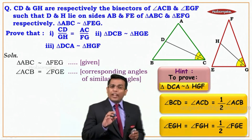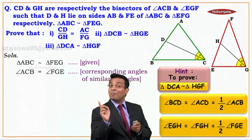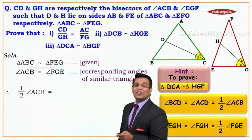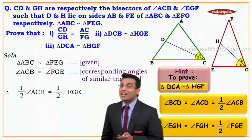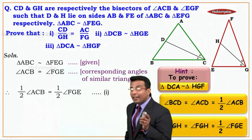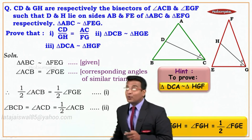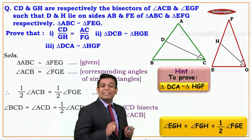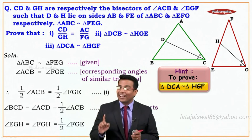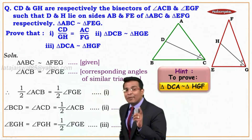Now if we look at what we have: we have angle ACB and angle FGE are equal. Multiplying both sides by half, we get half of angle ACB equals half of angle FGE — call this statement one. We already have angle BCD equals angle ACD equals half of angle ACB — statement two — because CD bisects angle ACB. Similarly, angle EGH equals angle FGH equals half of angle FGE — statement three — because GH bisects angle FGE.